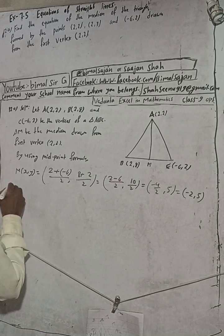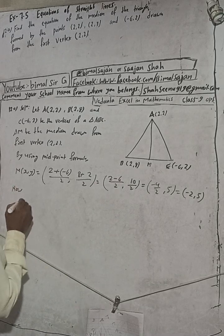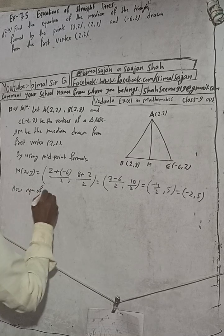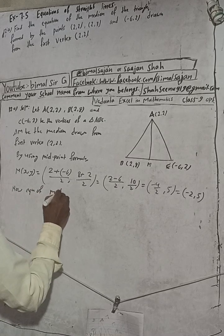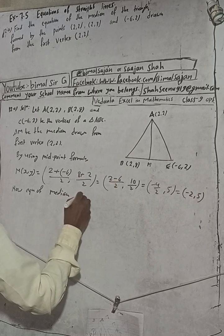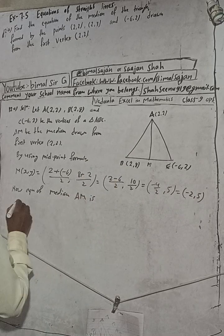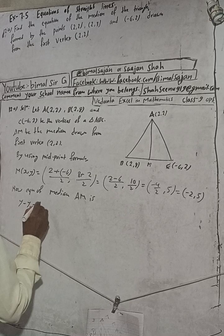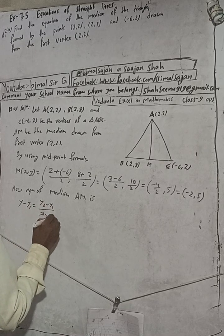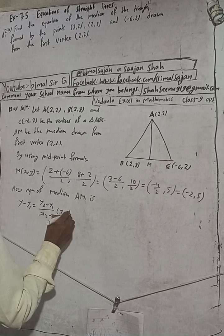Now, equation of median AM is: y minus y1 is equal to (y2 minus y1) by (x2 minus x1) into (x minus x1). This is the formula.